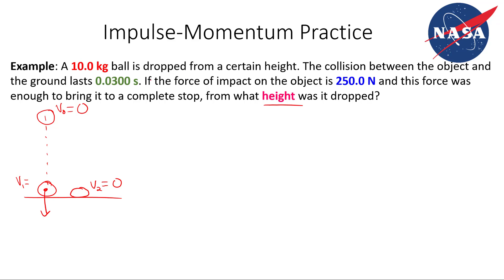We're given that the force from the ground is 250 newtons, and the time it feels the force is 0.03 seconds. Force times time is impulse. So our impulse while on the ground is just equal to 250 newtons times 0.0300 seconds.